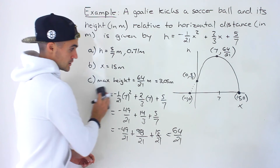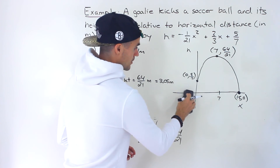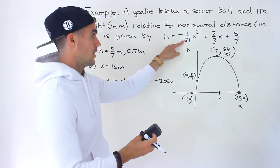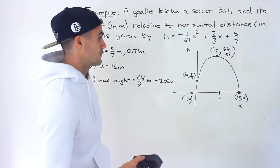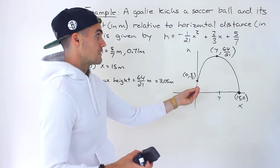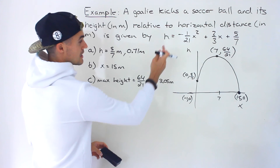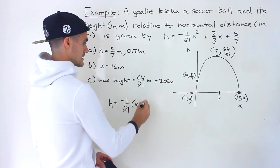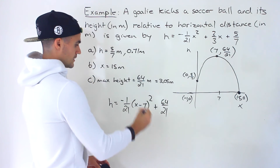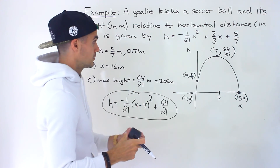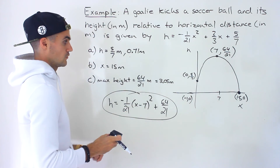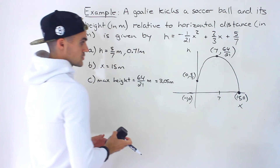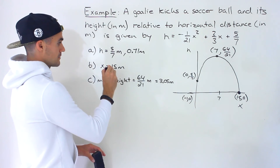For part D, we've already sketched the graph. By the way, you can also find the max height by completing the square to convert to vertex form. It would be messy with lots of fractions, but if you try it, the vertex form should give: negative 1 over 21 times (x minus 7) squared plus 64 over 21. You could try that as practice with completing the square. I find it easier to use the axis of symmetry since we already solved for the intercepts in part B.